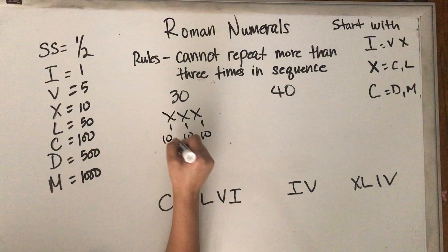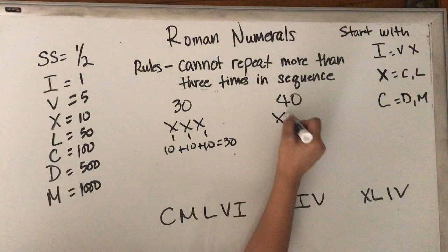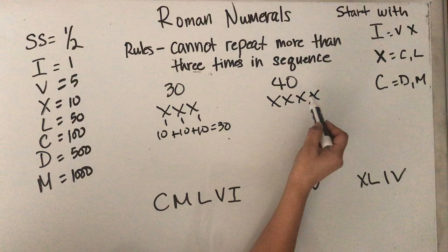40 cannot be written like this, although that's 10 plus 10 plus 10 plus 10. It equals 40, but it's not written that way. So that's a no-no.